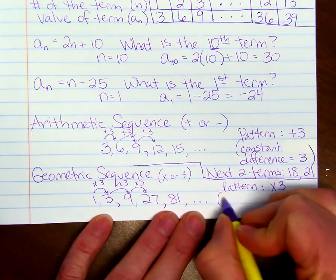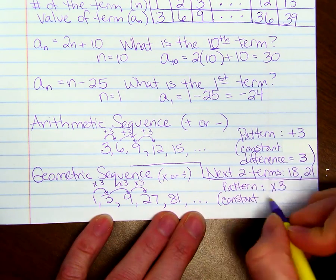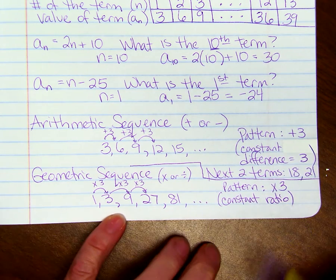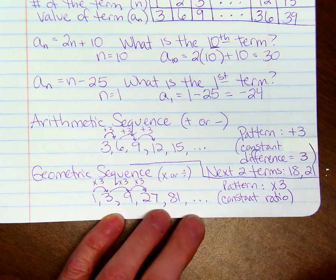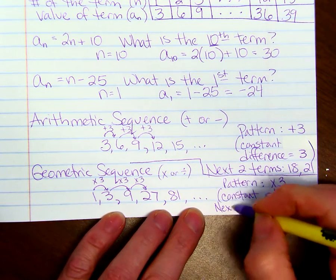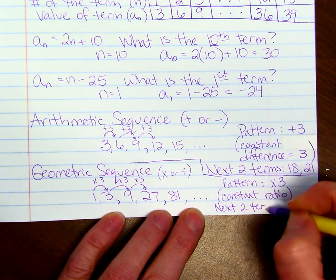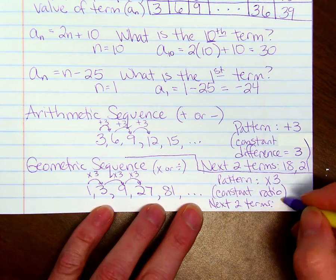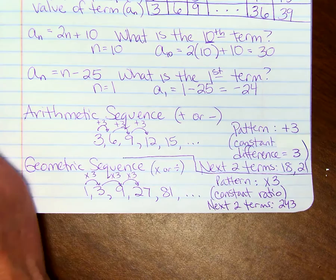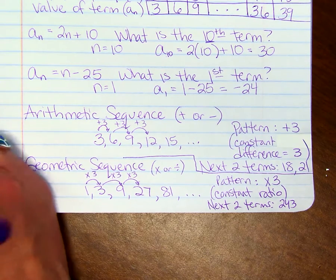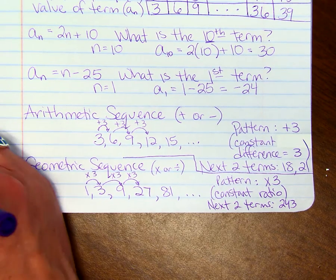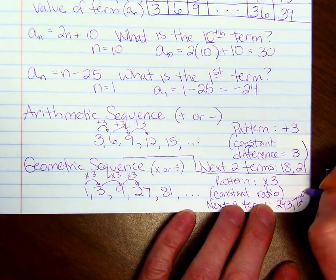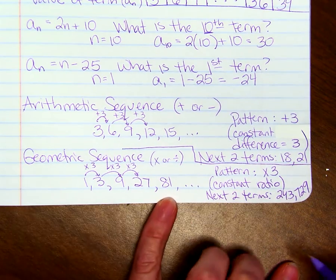The pattern of this geometric system is times 3. This is sometimes called the constant ratio. Above, we called it the constant difference. If we wanted to find the next two terms, we would multiply 81 by 3 to get 243. And then multiply 243 by 3 to get 729.